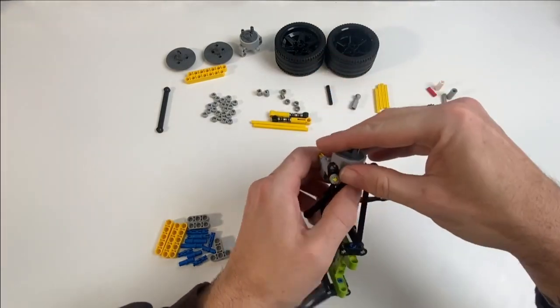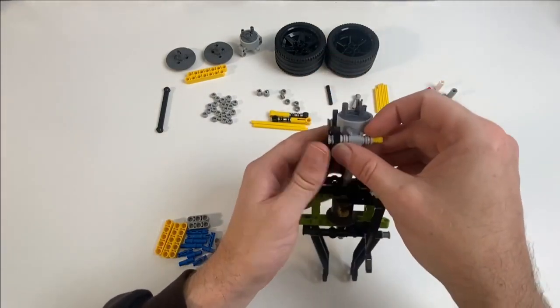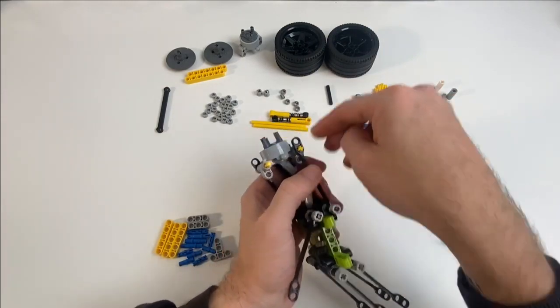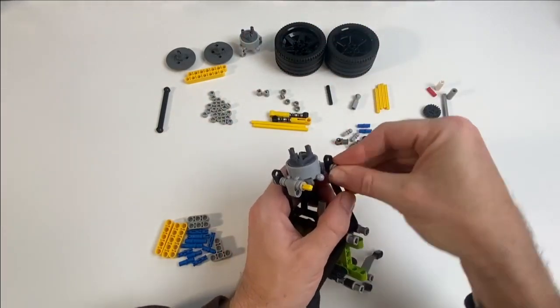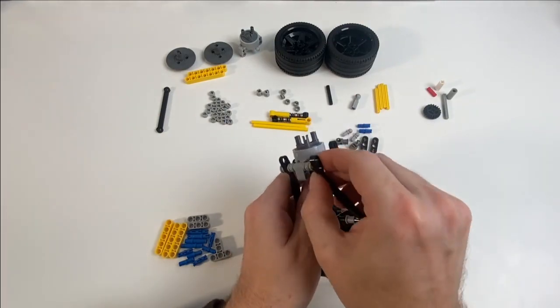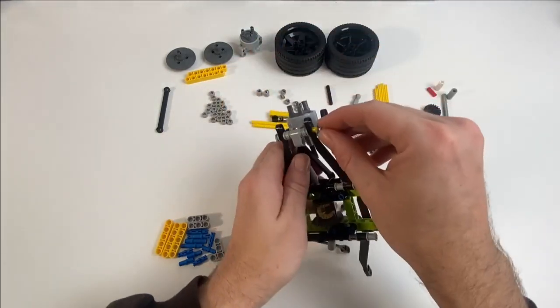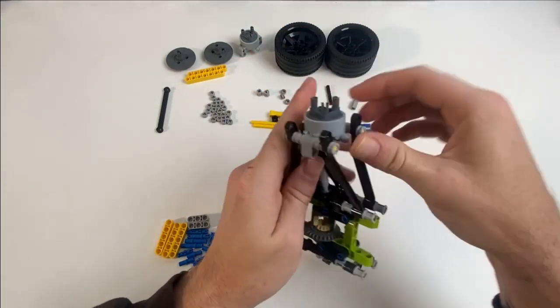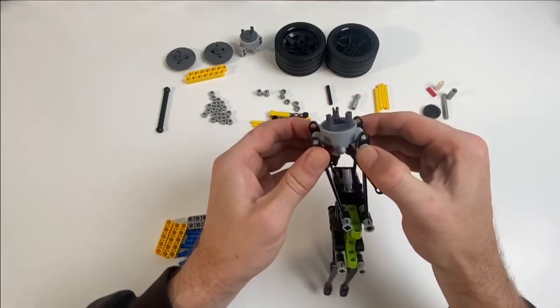These bushes do have a tendency to pop off under a lot of strain. So I used ones that were particularly tight fitting. If you've got pieces that you've used in multiple builds and they're starting to get a little bit loose, maybe just use some newer ones, or use the bushes with the teeth on them, which I find grip a little bit better as well.